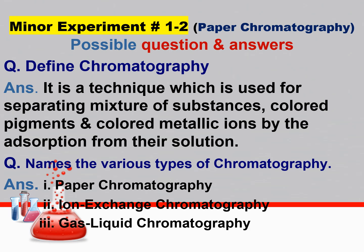Now I am going to explain some important questions and answers from minor experiment one and two. Both experiments are about paper chromatography. A question can be: define chromatography. It is a technique which is used for separating a mixture of substances, colored pigments, and colored metallic ions by adsorption from their solution. Name the various types of chromatography: paper chromatography, ion exchange chromatography, and gas-liquid chromatography.